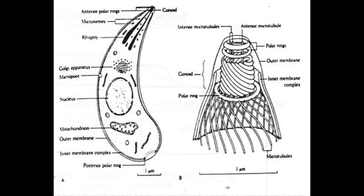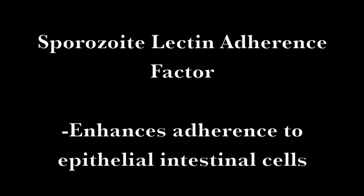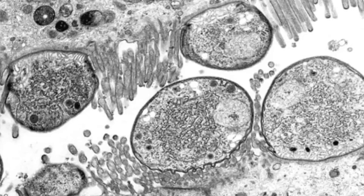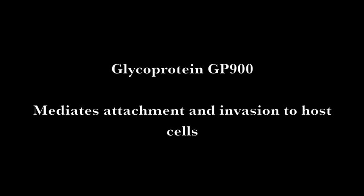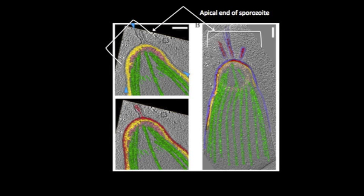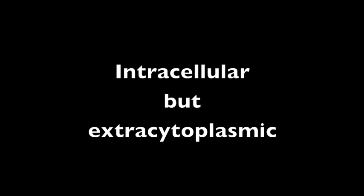This gliding motility is driven by the coupling of the translocation of surface adhesins on the parasite, driven by an actin-myosin motor beneath the parasite plasma membrane. Sporozoite-specific lectin adherence factor enhances the adherence of sporozoites to the cilia on the epithelial cells within the small intestine. Glycoprotein GP900 mediates the attachment and invasion to host cells and localizes at the apical end of the sporozoites. Once inside the host cell membranes, sporozoites become trophozoites and remain in the host cell membrane. Thus, the parasite Cryptosporidium parvum is intracellular but extracytoplasmic in its invasion of host cells.